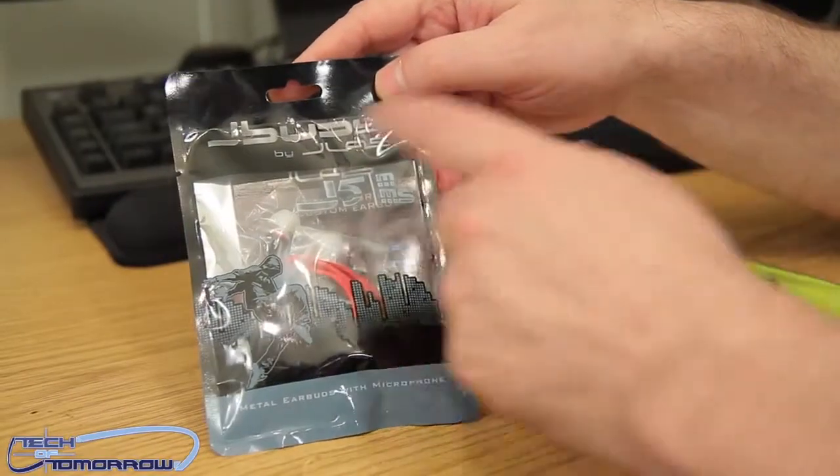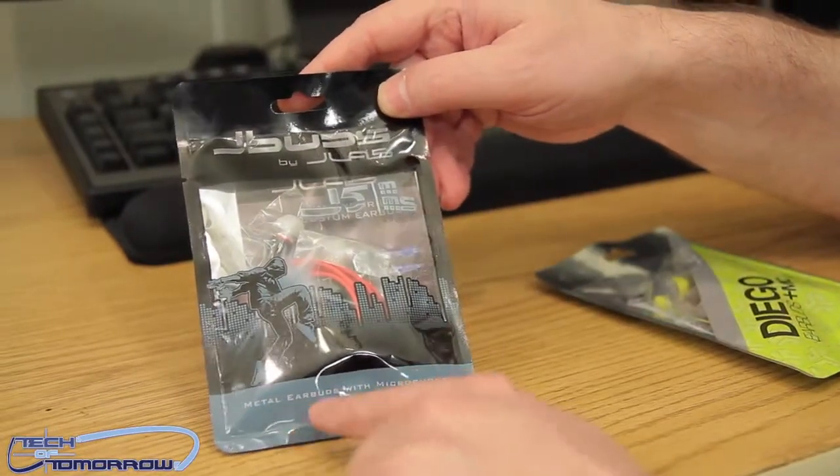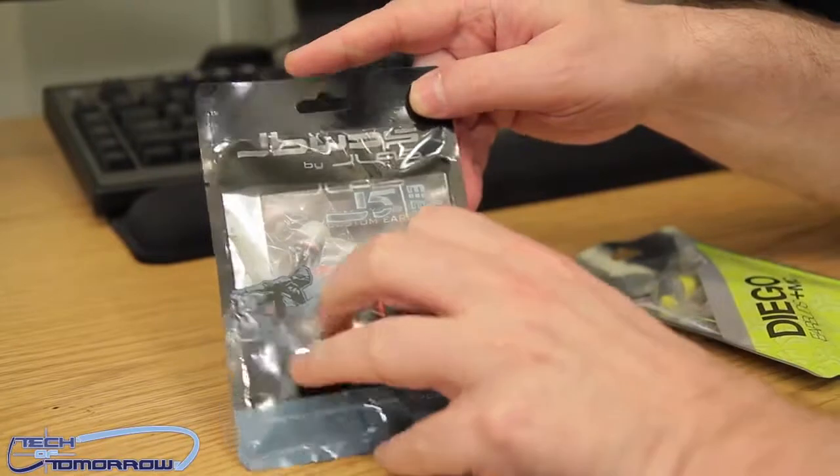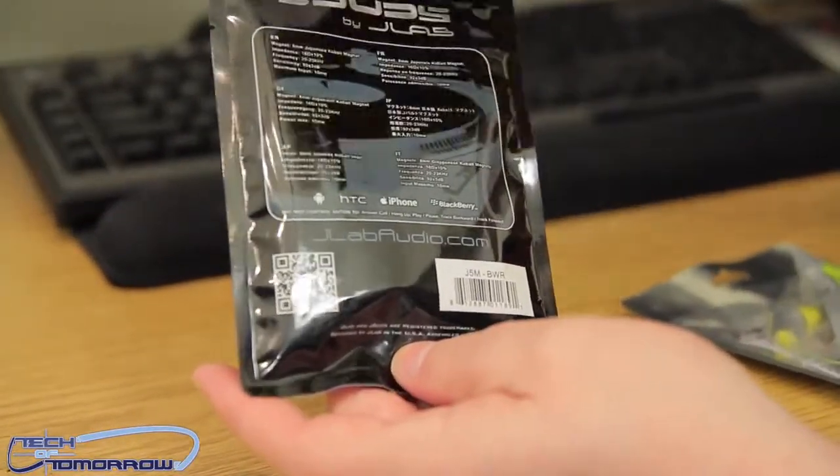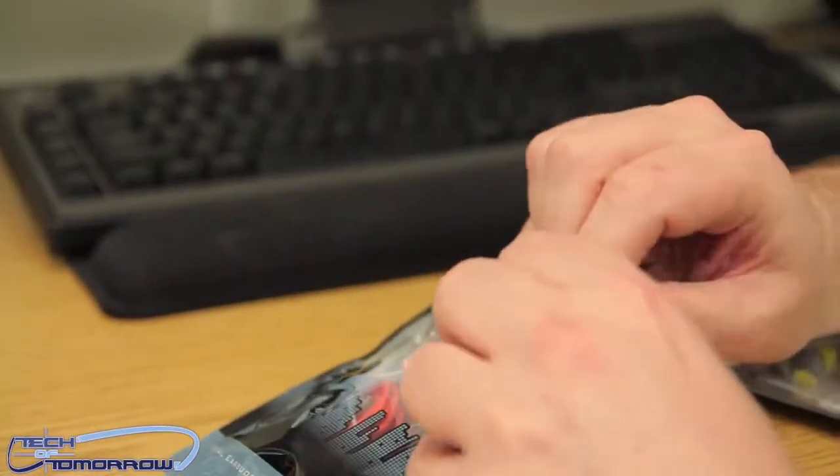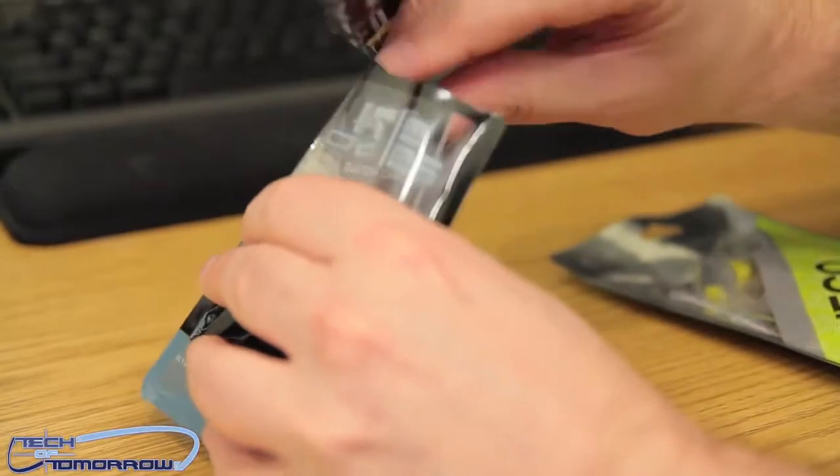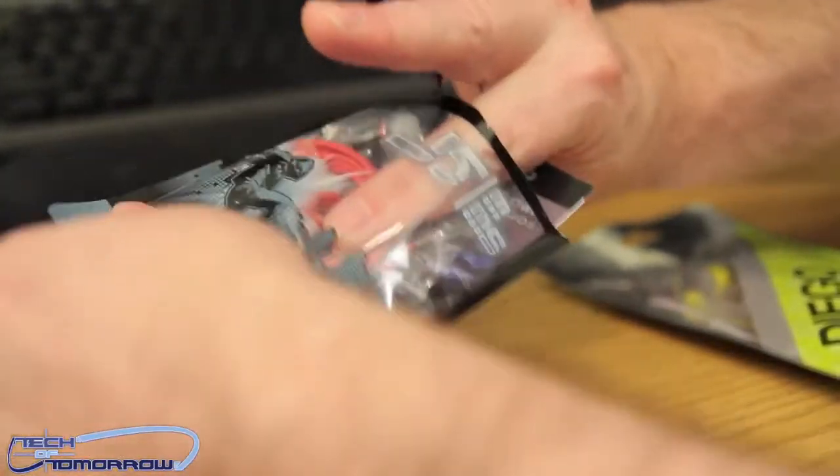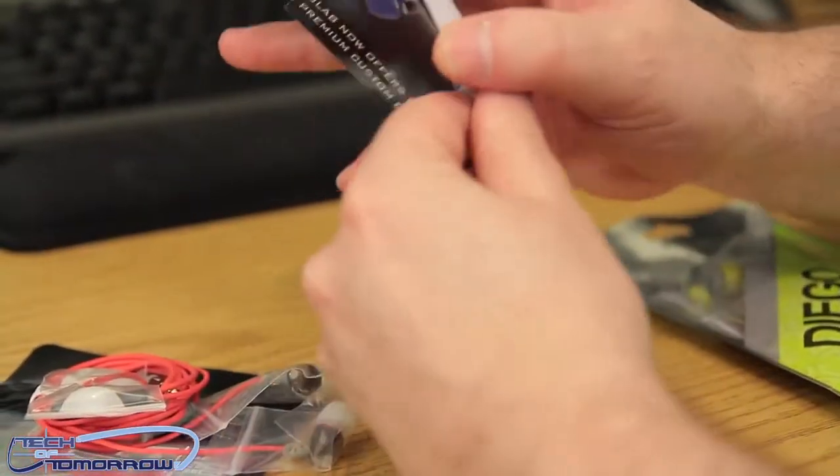Alright folks, you can see these are the J Buds by J Lab. These are the metal earphones with microphone. Not very much to it on the back, what matters is actually what's inside. I don't want to rip these packages too bad because I'm going to send these out to you guys, so I'm even going to leave the tab on there. Let's see what we got in here, let's see.